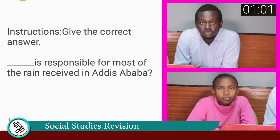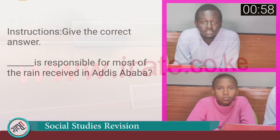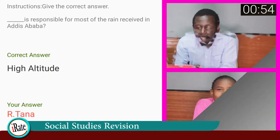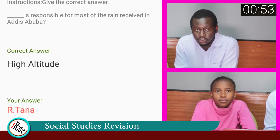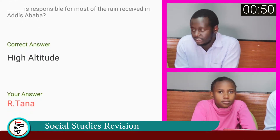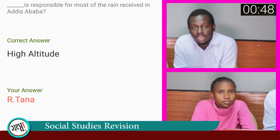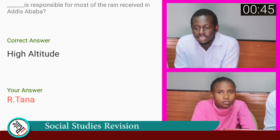Question number eight: What is responsible for most of the rain received in Addis Ababa? The student answered River Tana, but the correct answer is high altitude. The student is incorrect. It is the high altitude that is responsible for most of the rain received in Addis Ababa.